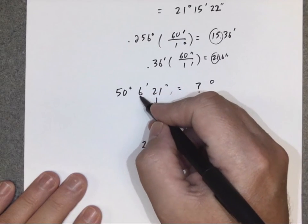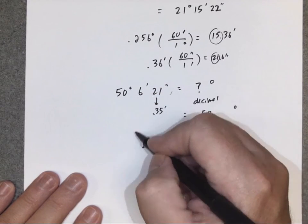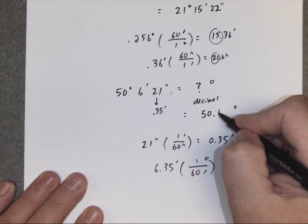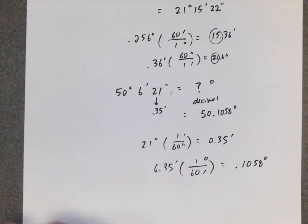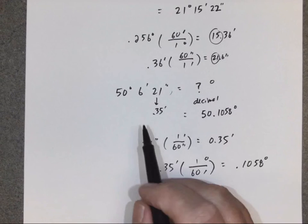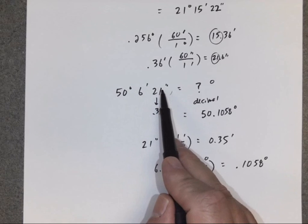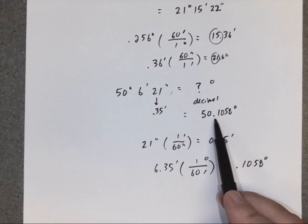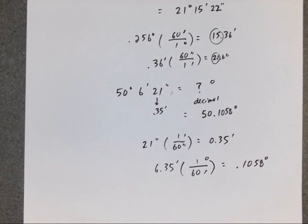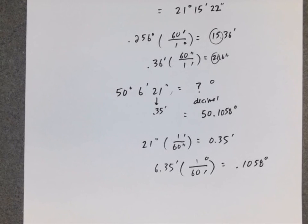So 6 minutes and 21 seconds equals 0.1058 degrees. Adding the 50 degrees, we get: 50 degrees, 6 minutes, 21 seconds equals 50.1058 degrees as a decimal. That's how you go back and forth between decimal degrees and degrees-minutes-seconds. We'll have one more video to finish module one.